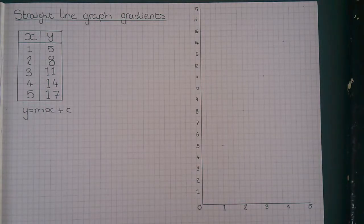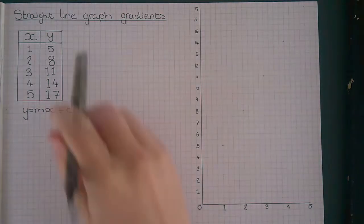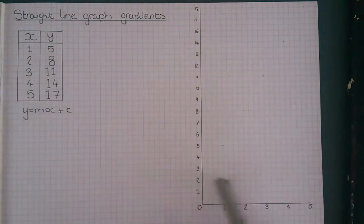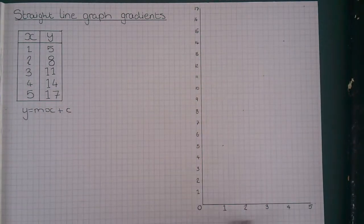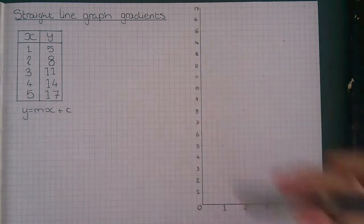This video is on gradients of straight line graphs. This is our table of values and these are the axes of our graph. The x-axis goes across and the y-axis goes up.